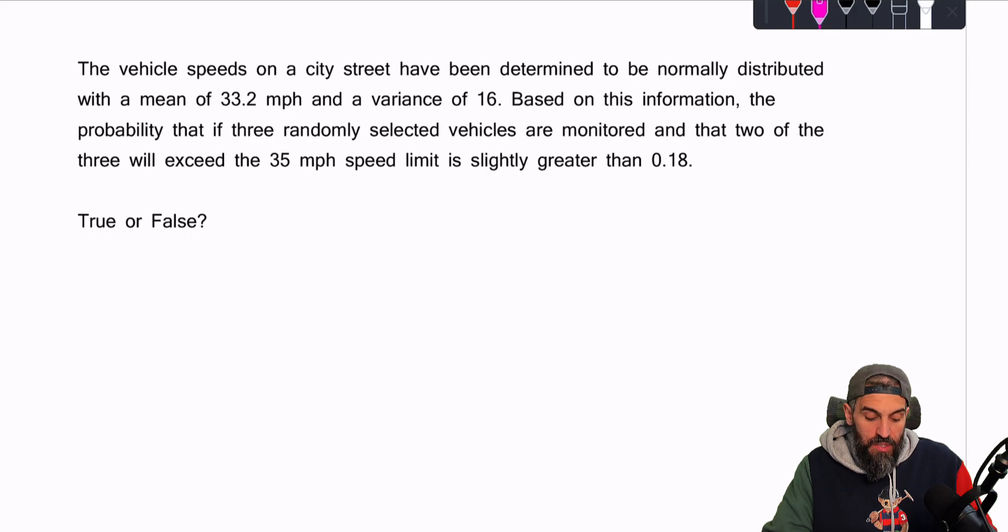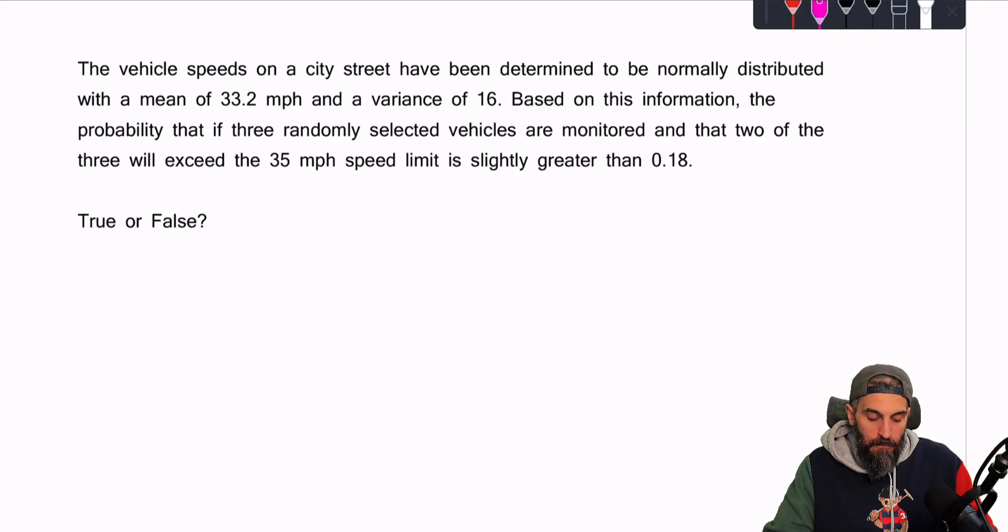Question number two, the vehicle's speeds on a city street have been determined to be normally distributed with a mean of 33.2 miles per hour and a variance of 16. Based on this information, the probability that if three randomly selected vehicles are monitored and that two of three will exceed 35 miles per hour, slightly greater than 0.18. Okay, so they're basically asking you, what is the probability that two out of the three will exceed 35 miles per hour?